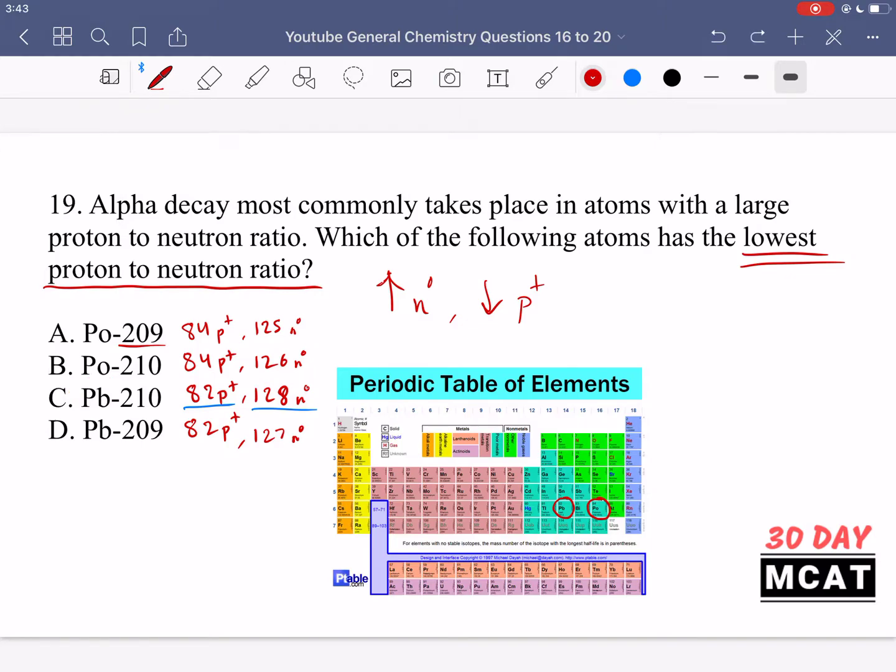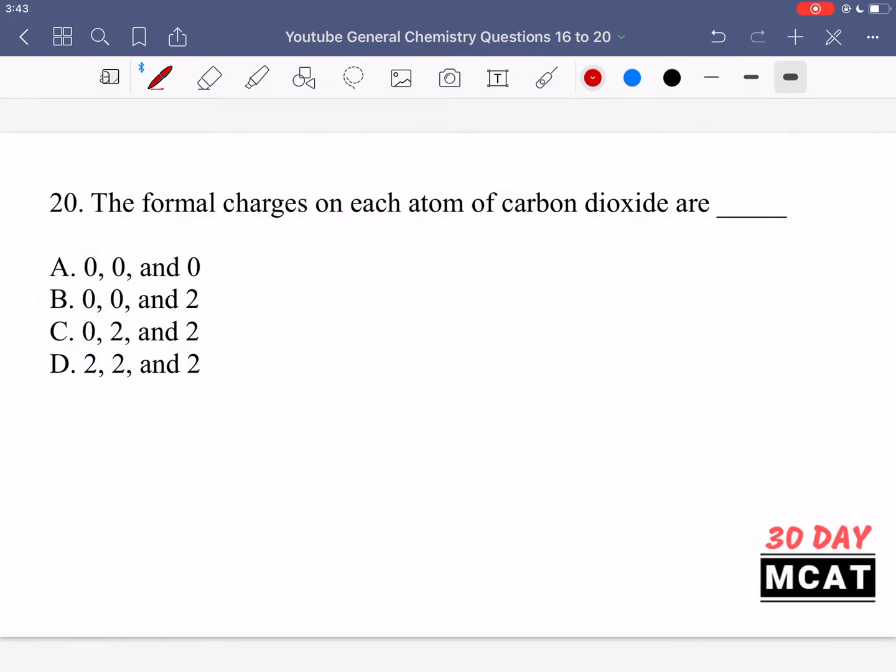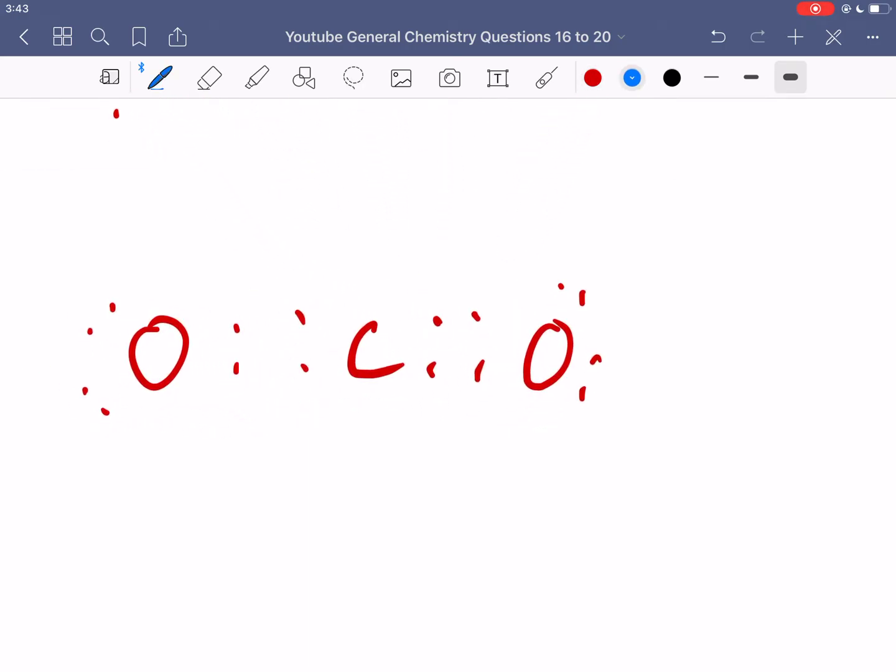In question 20 it asks for the formal charges on each atom of carbon dioxide. This is what the structure of carbon dioxide looks like. To determine formal charge, think about the actual valence electrons that an element has and how many it has around it in the Lewis structure we've drawn. Carbon has four valence electrons. In a bond we count one electron, so carbon has one, two, three, and four. Carbon wants four around it and does have four, therefore carbon is neutral with no formal charge.